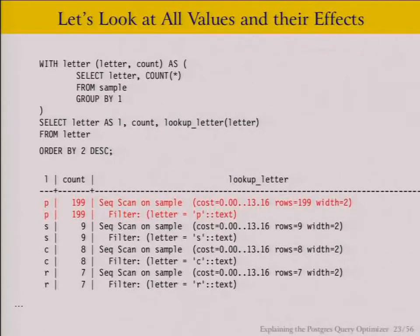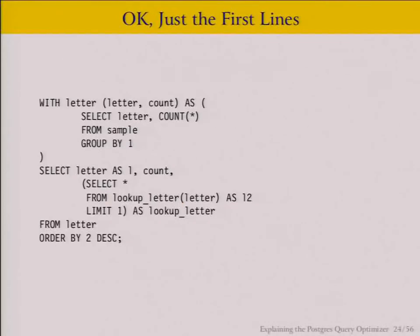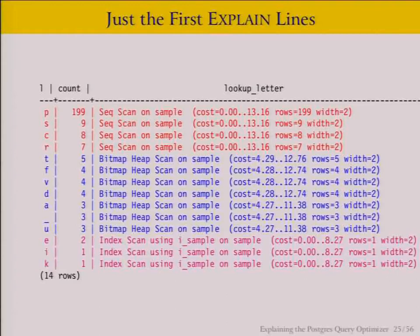This is the quintessential slide for the presentation. It illustrates that as we go from the most common values at the top to the least common values at the bottom, the optimizer is automatically changing the type of access method it uses to get at the data — automatically, without me having to do anything to the query itself. This is all driven by the ANALYZE statistics.